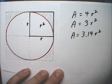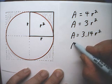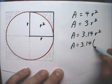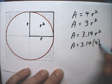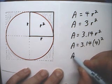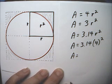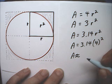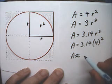So, in our problem, the radius was 4. So, we end up with area is equal to 3.14 times 4 squared. And if you work this out, the area works out to approximately 50.2 centimeters squared.